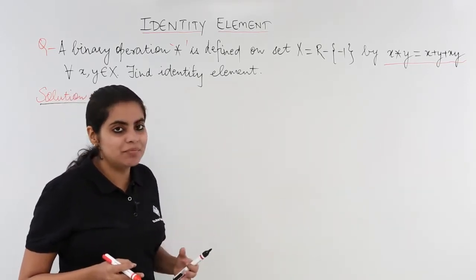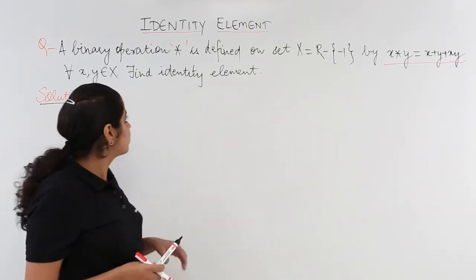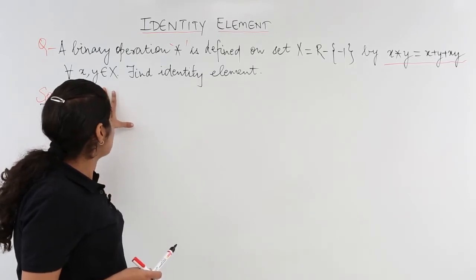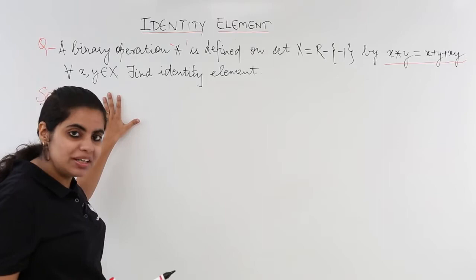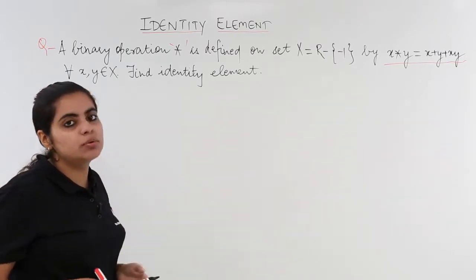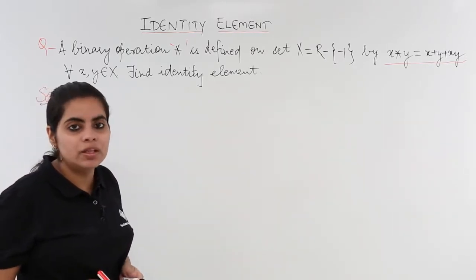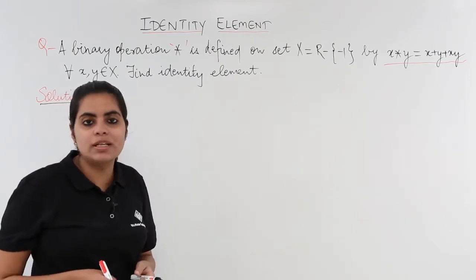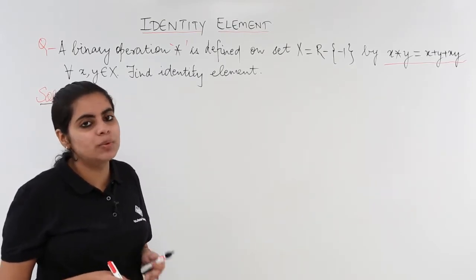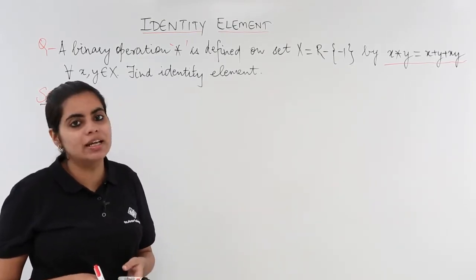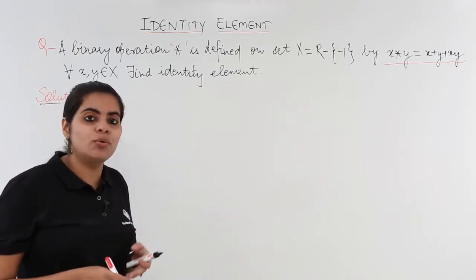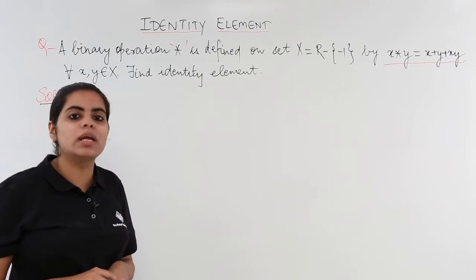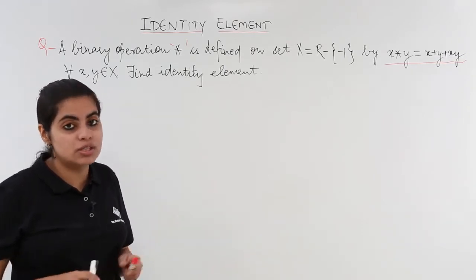It is given that x and y belong to the given set X. That means they are real, but not minus 1. You have to find what is the identity element. For those who don't know what is the identity element, I request you to please watch the previous videos on identity element with numerical problem number 1. And for those who know, let's get started with solving what is the identity element for this question.